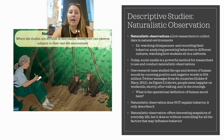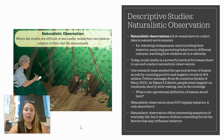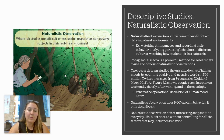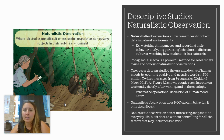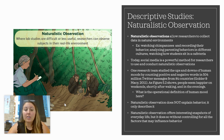Next is naturalistic observation — you've probably all done this if you've ever people-watched. It allows researchers to collect data in natural environments. One of the most famous examples is a well-known animal researcher who studied chimpanzees specifically. She went into the jungle, into their area, and just sat and watched them, taking down data. That's a naturalistic observation.